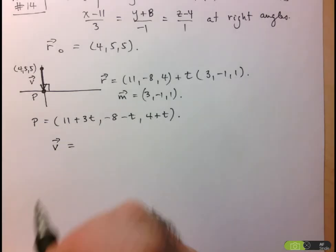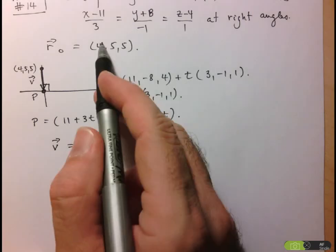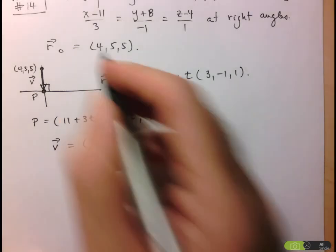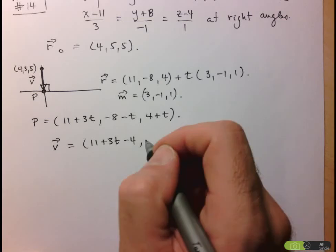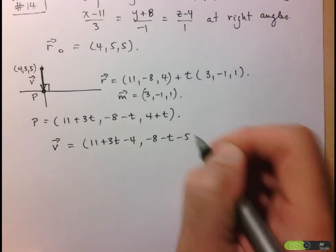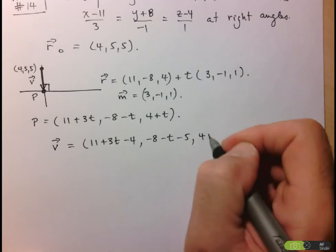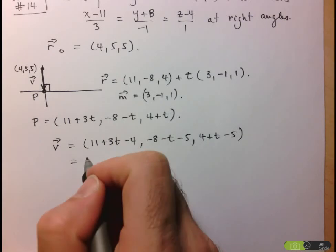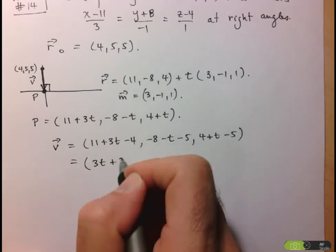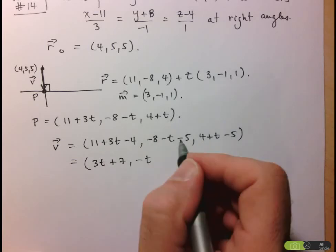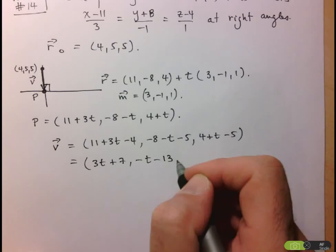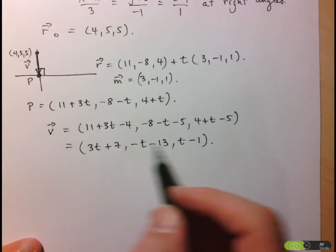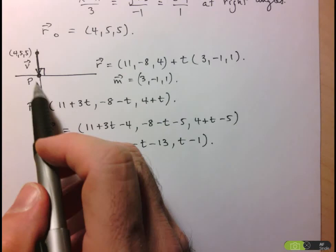Let's calculate vector v as second minus first. The x component: (11 + 3t) - 4 = 3t + 7. The y component: (-8 - t) - 5 = -t - 13. The z component: (4 + t) - 5 = t - 1. So v = (3t+7, -t-13, t-1), which is parallel to the line I'm looking for.